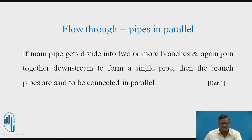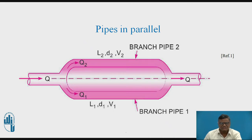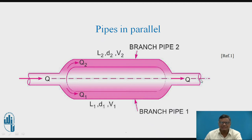If this situation is there, then those branch pipes are called connected in parallel. For simplicity, consider only two branches. On the left hand side you can observe the main pipe, then it is branched into two — branch pipe number one on the lower side and branch pipe number two on the upper side. Again they are meeting each other, and we have again the main pipe continuing.